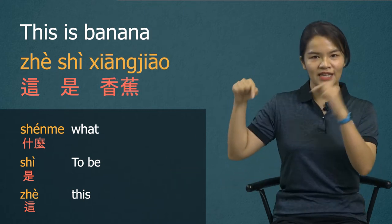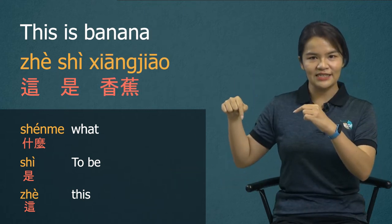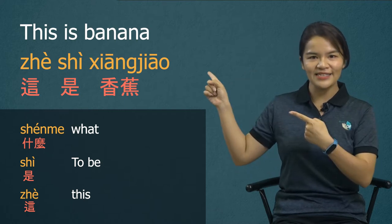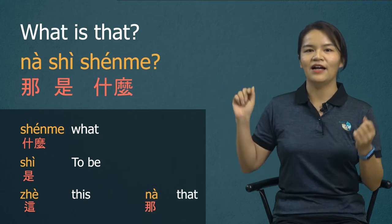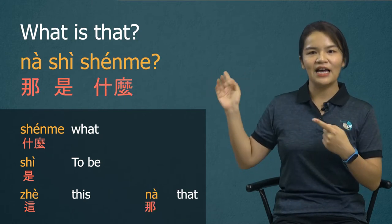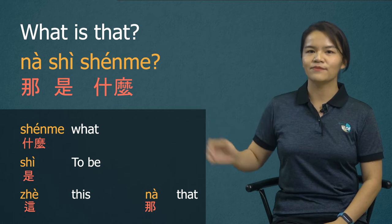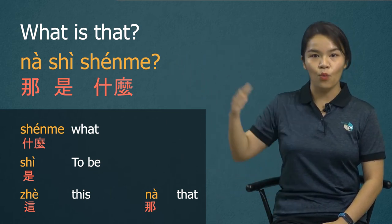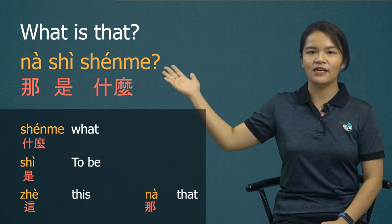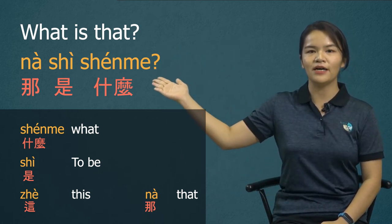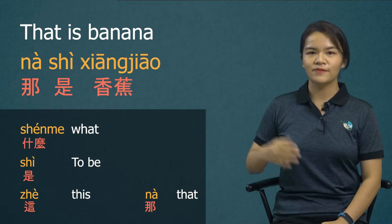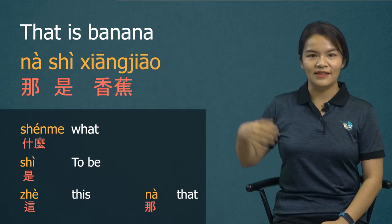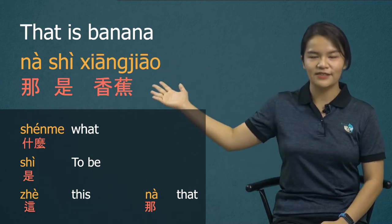So 'this' is 这, right? How about 'that'? That is 那. 那是什么 — what is that? 那是什么? 那是香蕉 — that is banana.